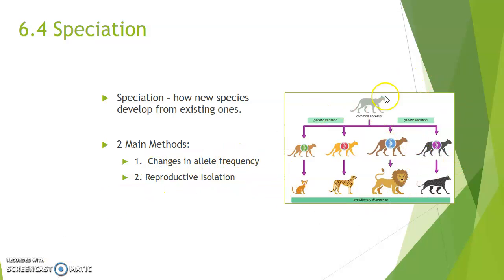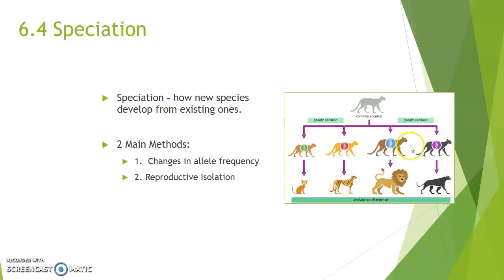As an example of speciation, we think that cats are all descended from a single ancestor species. Things like lions, cheetahs, house cats, and panthers all resulted from different mutations. They eventually lost the ability to interbreed with one another, and now they're all considered different species.